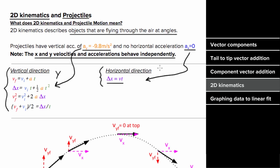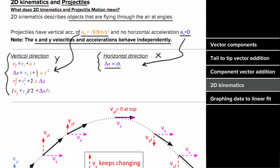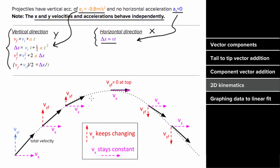You should only plug in horizontal components into the distance-rate-time equation. As a projectile flies through the air, since there is no horizontal acceleration, the horizontal component of the velocity remains the same for the entire trip, meaning the rate at which the projectile moves in the x direction never changes. But since there is acceleration in the vertical direction, the vertical component of the velocity gets smaller and smaller until the top.